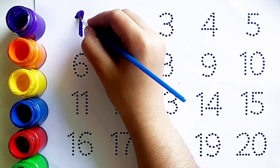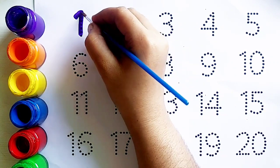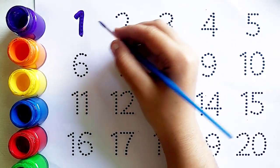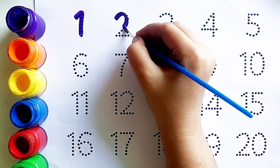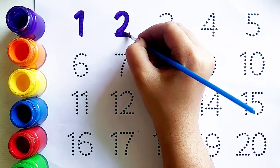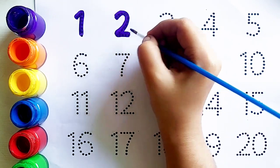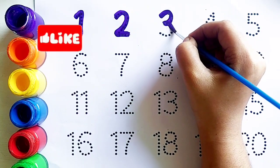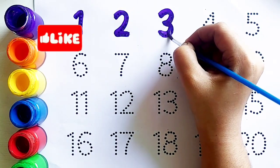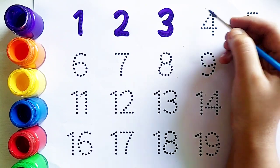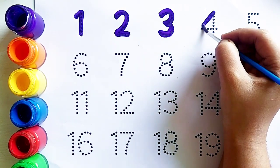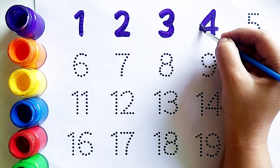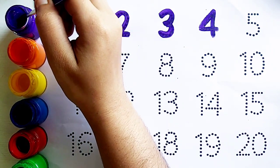Number one. ये क्या है बच्चों? ये है number one. One के बाद आता है number two. ये है number two. Two के बाद आता है number three. Three के बाद आता है number four.